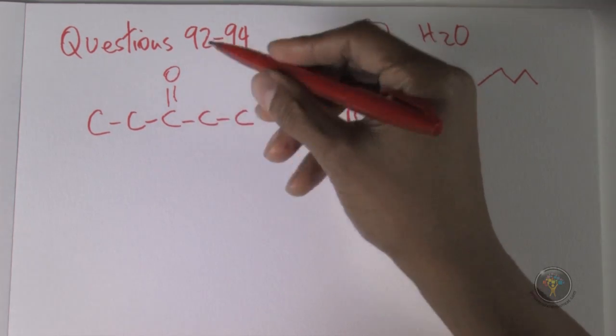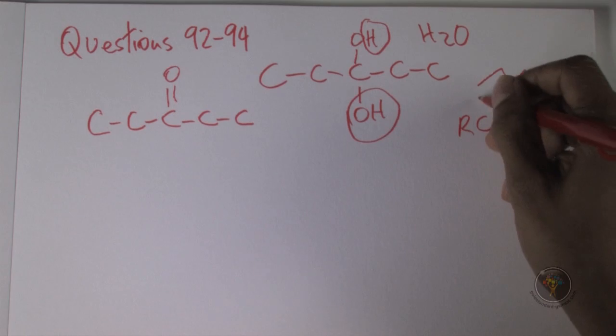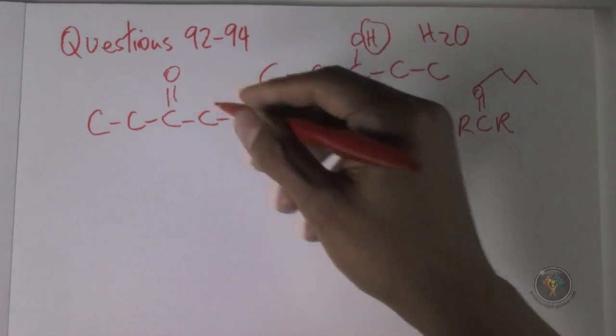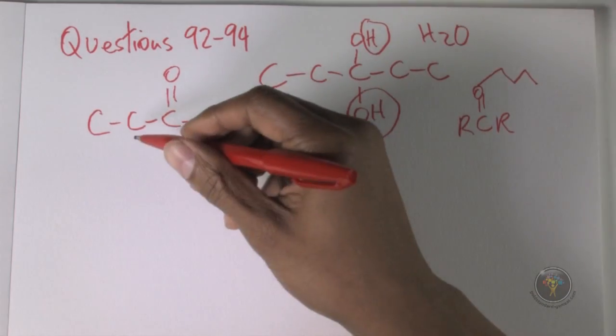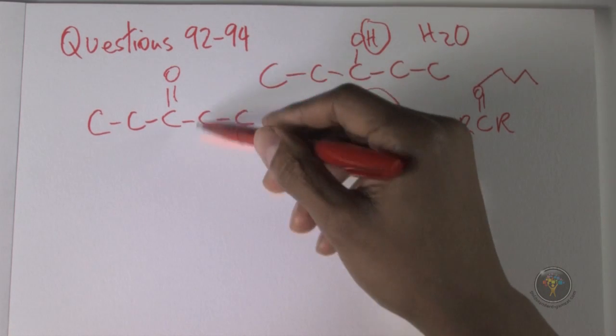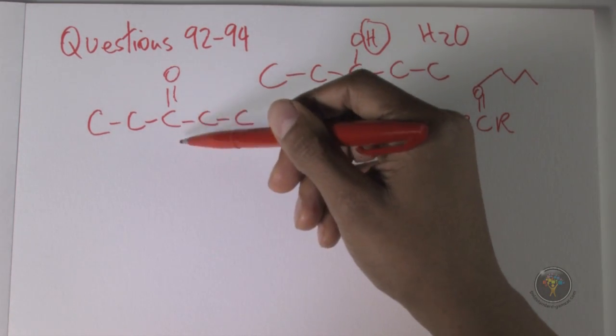We just need to name this. It's one, two, three, four, five, it's pent. It's a ketone because the functional group of a ketone is this, so it ends in -one. So it's pentanone. Then we have to say where the functional group is, it's on the third carbon, so this is called 3-pentanone.